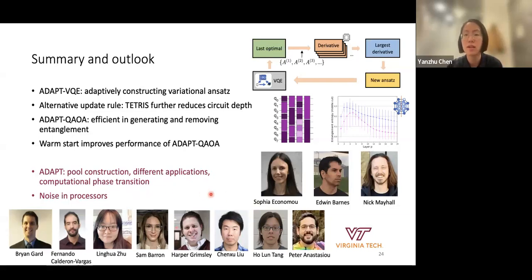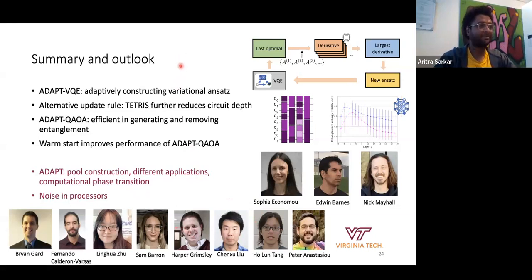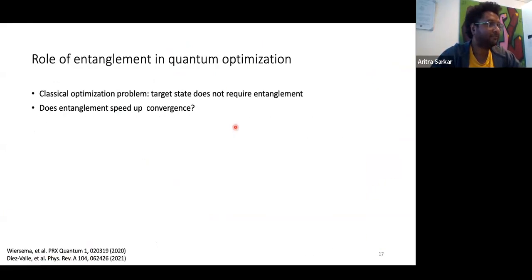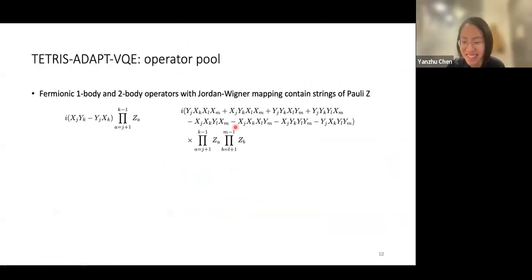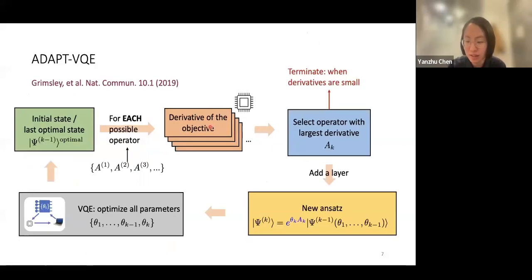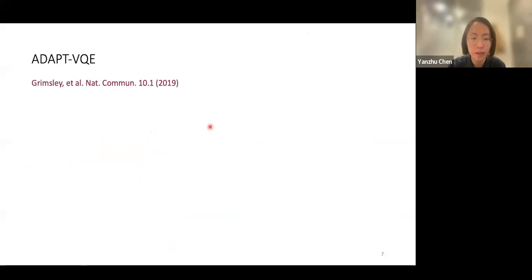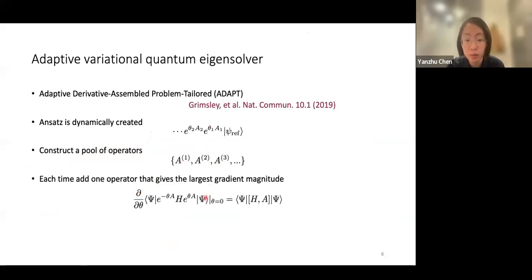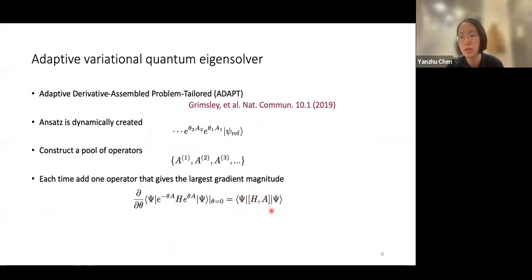Thank you for your attention. During Q&A: on how to measure the derivative—for each candidate operator in the pool, the derivative is given by the expectation value of the commutator between the problem Hamiltonian and the candidate operator. Since we know both, we can calculate this commutator operator and directly measure it on the quantum processor.